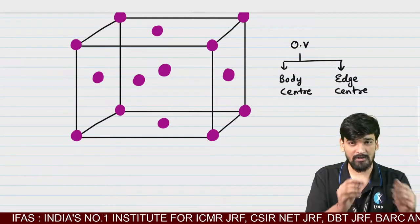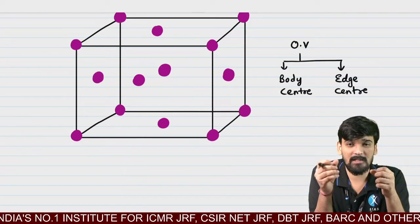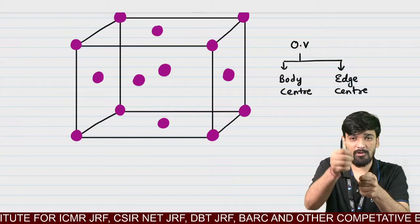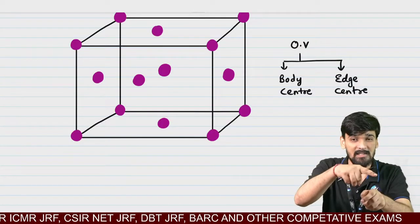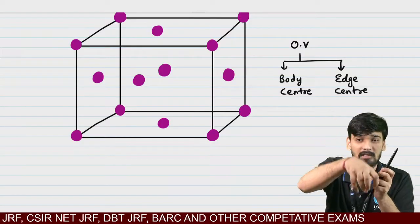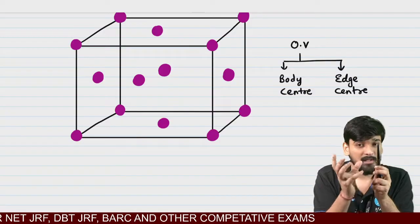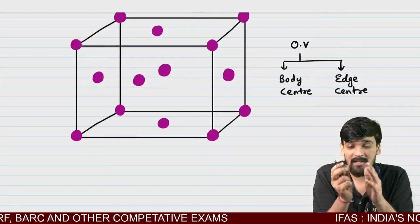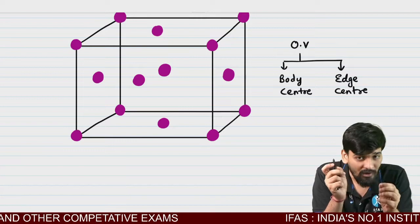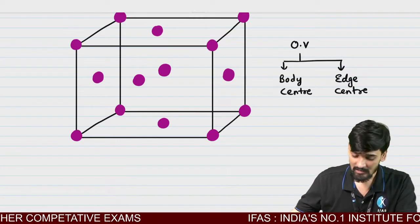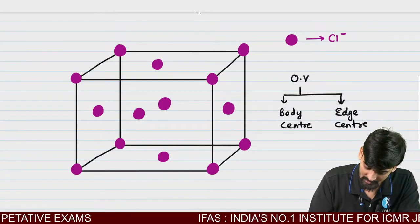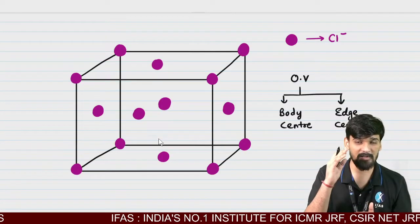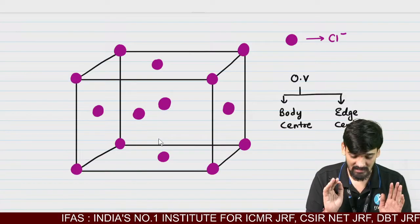The geometry of octahedral voids: take four balls kept so they are touching each other in one plane — first, second, third, and fourth ball. Then take one more ball covering the upper cavity and one covering the below cavity. The shape formed is the octahedral shape, and the void space between these six balls is known as the octahedral void.